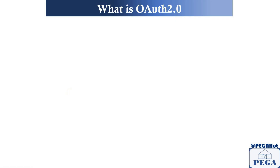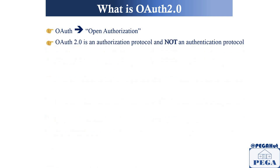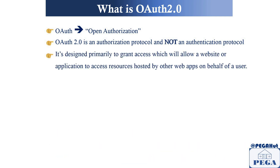Let's understand what OAuth 2.0 is. OAuth means Open Authorization. As the name itself indicates, it's an authorization protocol, not an authentication protocol. It is basically designed primarily to grant access, which will allow a website or application to access resources hosted by other web apps. So if you have application A and application B, and you're trying to log into application A, it will allow you to log into application B to get information from there. This is very common — you'll find it in many apps where they allow you to log in via Facebook or log in via Google. That's what OAuth is designed for. It is mainly used for delegated authorization.